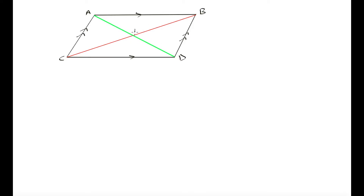Let's call the intersection point I. What we're trying to prove is that CI equals BI in length — meaning diagonal AD cut CB into two equal parts — and that AI equals DI in length, meaning diagonal CB cut AD into two equal parts. That is what it means for diagonals to bisect one another.